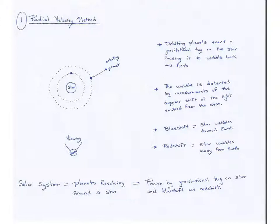With the radial velocity method, what we look at is that if there is a planet orbiting that star, then that orbiting planet will exert a gravitational force on that star and it will cause the star to wobble.